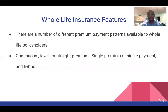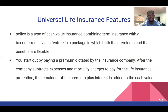There are a number of different premium payment patterns available to whole life policyholders: continuous level or straight premium, single premium or single payment, and hybrid. Universal life insurance is a type of cash value insurance combining term insurance with a tax-deferred savings feature in a package where both the premiums and the benefits are flexible. You start by paying a premium dictated by the insurance company; after the company subtracts expenses and mortality charges for life insurance protection, the remainder plus interest is added to the cash value.